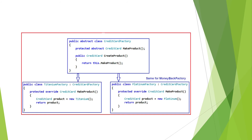As we currently have three credit cards — MoneyBack, Platinum, and Titanium — we created three subclasses: Platinum factory, Titanium factory, and MoneyBack factory. These three classes implement the abstract CreditCardFactory class and provide the implementation for the makeProduct abstract method. The makeProduct method creates and returns the actual product object. For example, the Titanium factory's makeProduct method creates and returns an object of the Titanium class, the Platinum factory's makeProduct method returns a Platinum object, and the same applies to the MoneyBack factory.